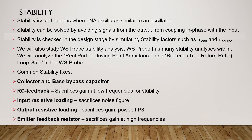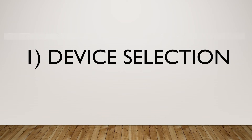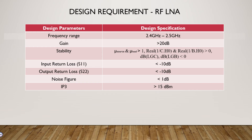To select a device, we need to have design requirements for the LNA. The LNA design requirement is derived from the transmitter line-up specification. Generally, the technical manager or team lead will handle the transmitter line-up specification and engineers will be given a specification to design the LNA accordingly. The specifications for this tutorial are: frequency range 2.4 GHz to 2.5 GHz, gain around 20 dB, unconditionally stable across a wide frequency range, input and output return loss less than -10 dB, noise figure less than 1 dB, and IP3 more than 15 dBm.